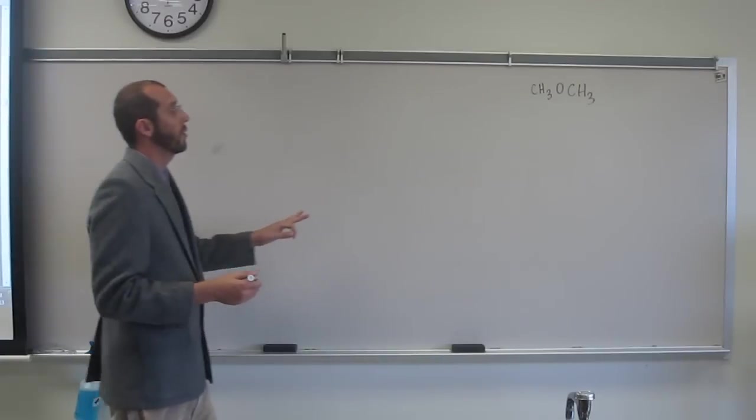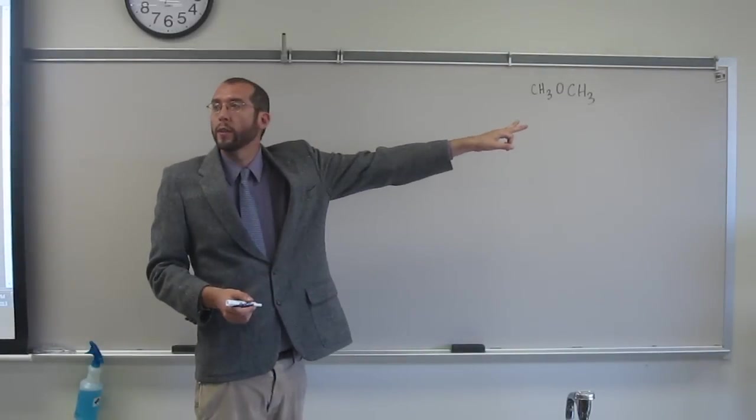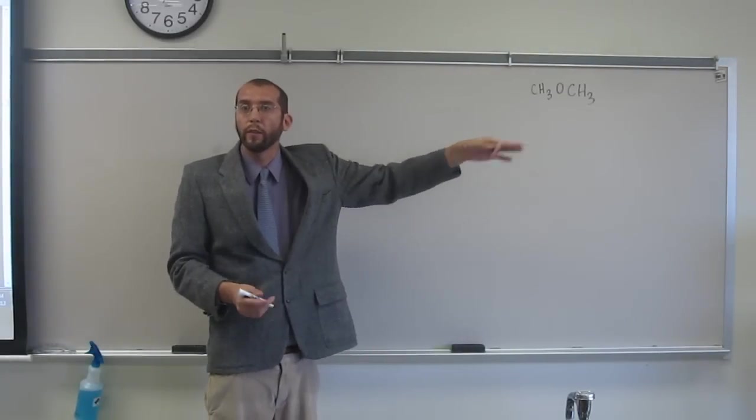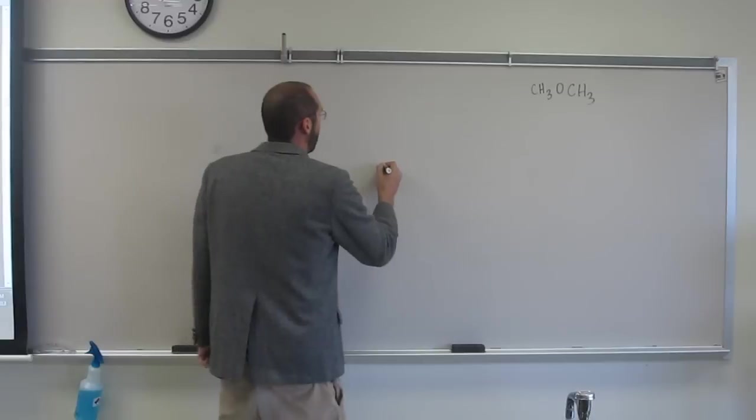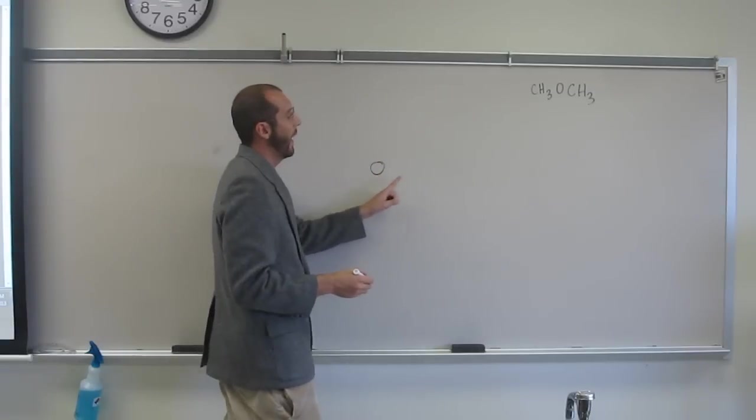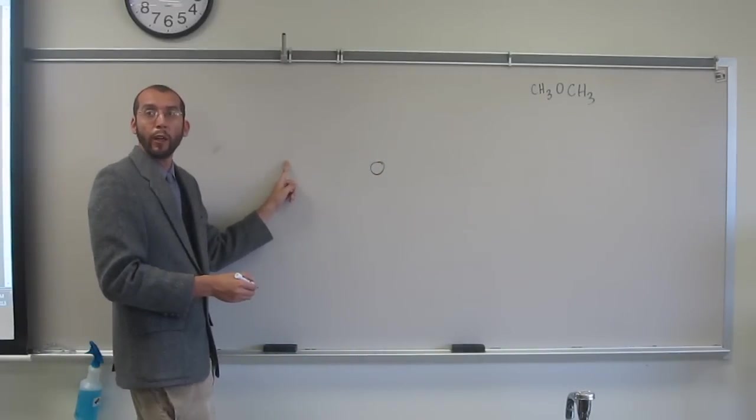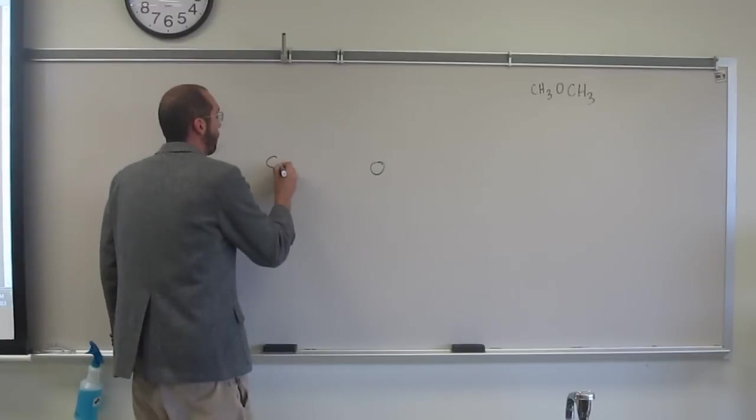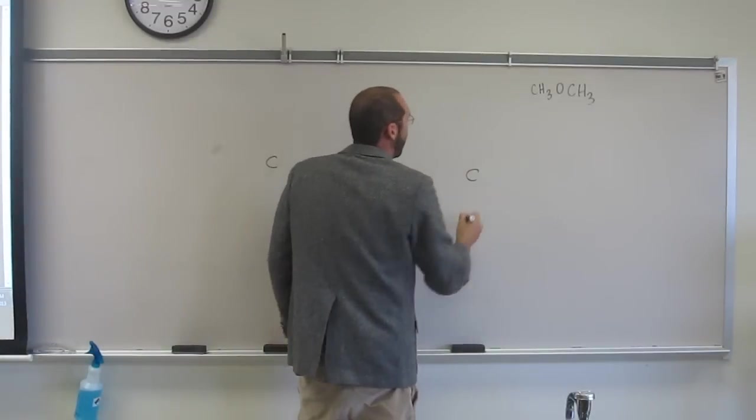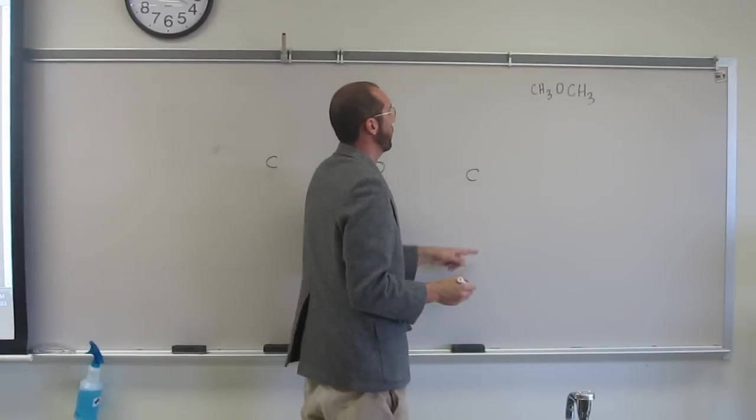So the central atom, again, it shows you what the central atom is. It's oxygen, the very central one. And then next to that, we have a carbon here and a carbon here. Do you guys see that from the molecular formula? And then around those carbons, we have three hydrogens.